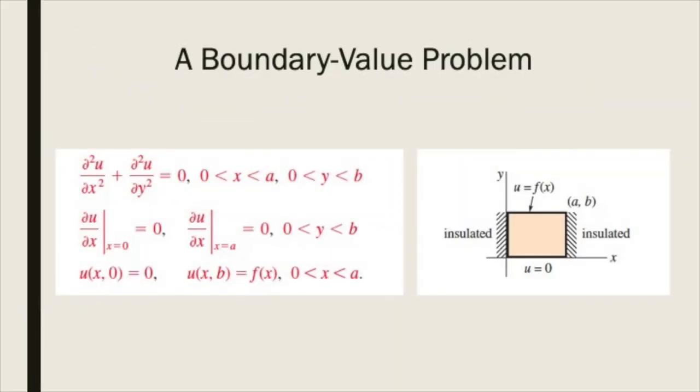Under the interpretation as a steady state heat distribution, this boundary value problem models a rectangular solid with insulated edges, the bottom of which is kept at 0 degrees while some arbitrary heat distribution is applied to its top. This corresponds to 0 Neumann boundary conditions at the boundaries x equals 0 and x equals a, a 0 Dirichlet boundary condition at y equals 0, and a non-zero Dirichlet condition at y equals b. What will the final temperature distribution be in the solid?